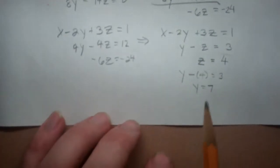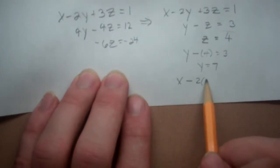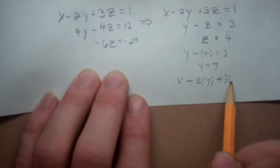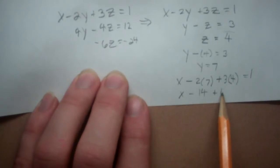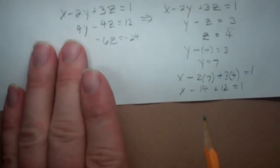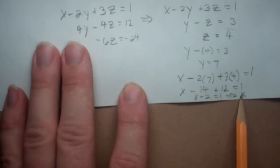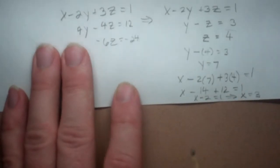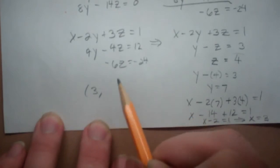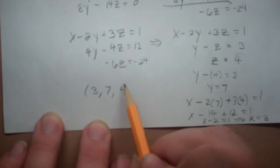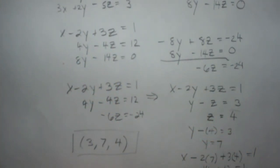Now that we know z equals 4 and y equals 7, let's find x using the top equation: x minus 2 times 7 plus 3 times 4 is equal to 1. This gives x minus 14 plus 12 equals 1. Negative 14 plus 12 gives negative 2, so x minus 2 equals 1, meaning x is equal to 3. We have found all three unknowns: x is 3, y is 7, and z is 4. You can check this by plugging them into all three equations. Here is our solution to this Gaussian elimination problem.